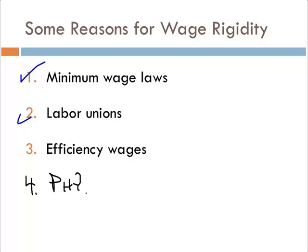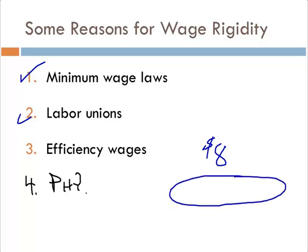The efficiency wage theory says: if I'm a company and the going rate is $8 an hour, I'll just get the same pool of workers as everyone else. But if I pay $10 an hour, everybody will want to come to my company, so I get to pick the very best. By paying above equilibrium, I get higher quality applicants, lower turnover, and more productivity — making it overall cheaper for me to pay a little bit more.